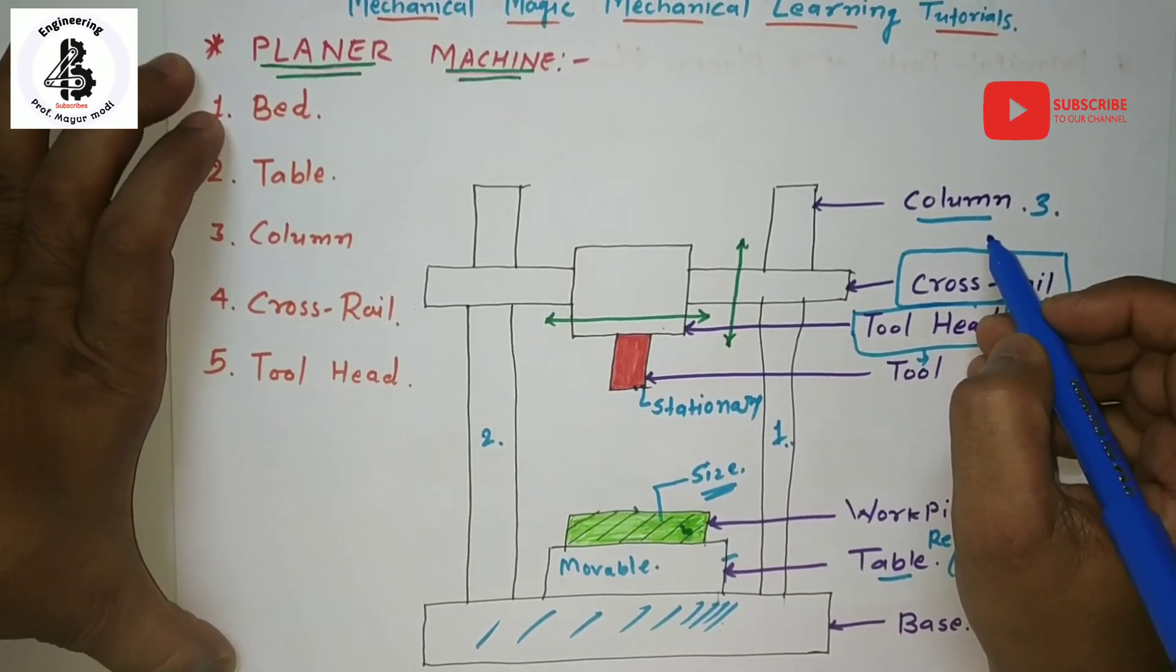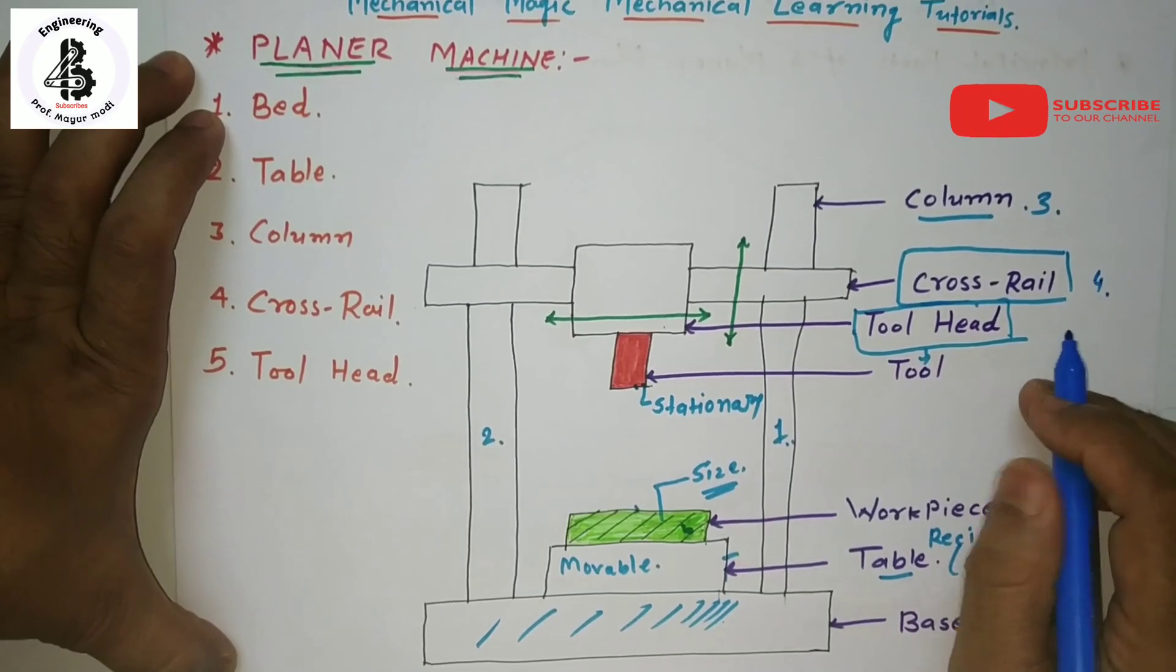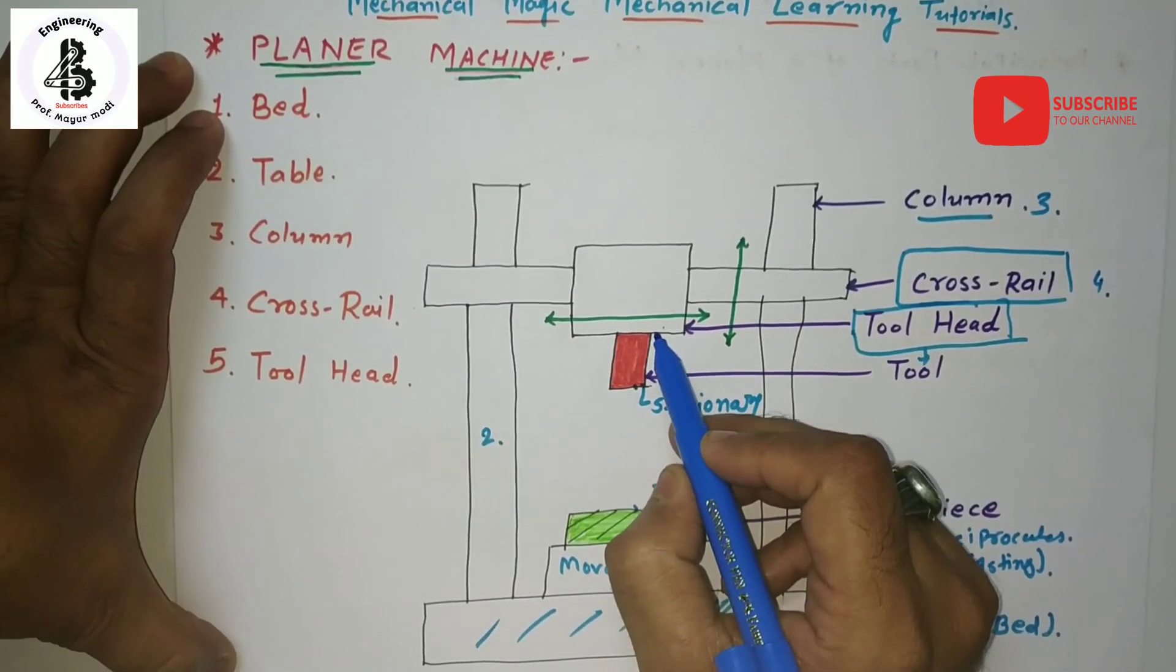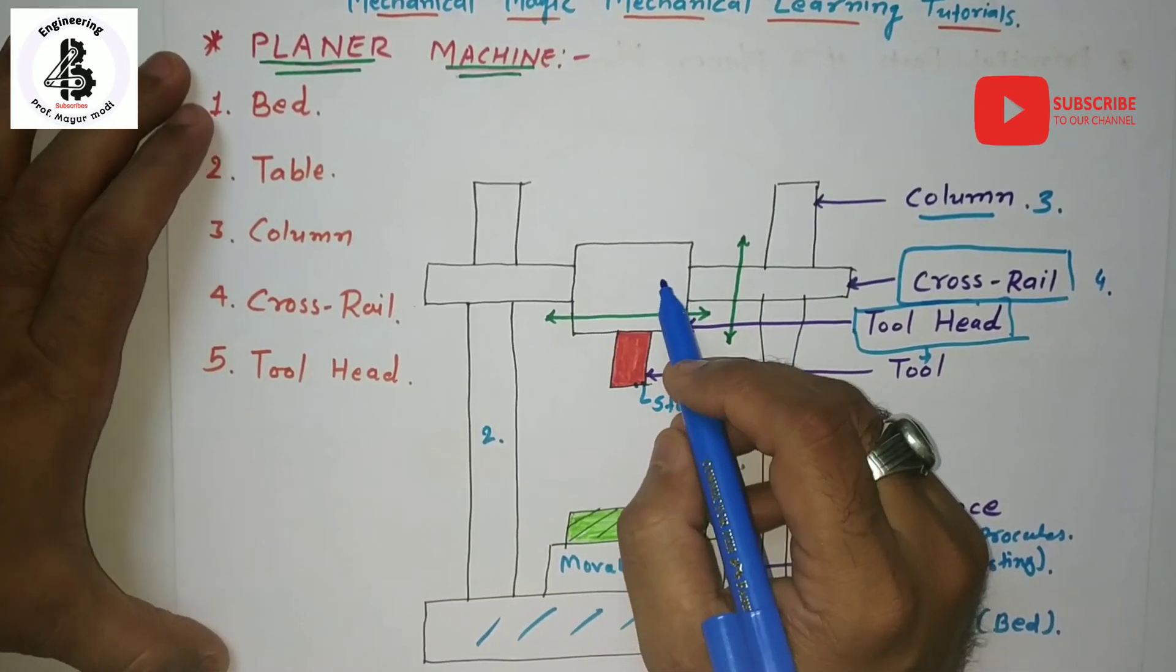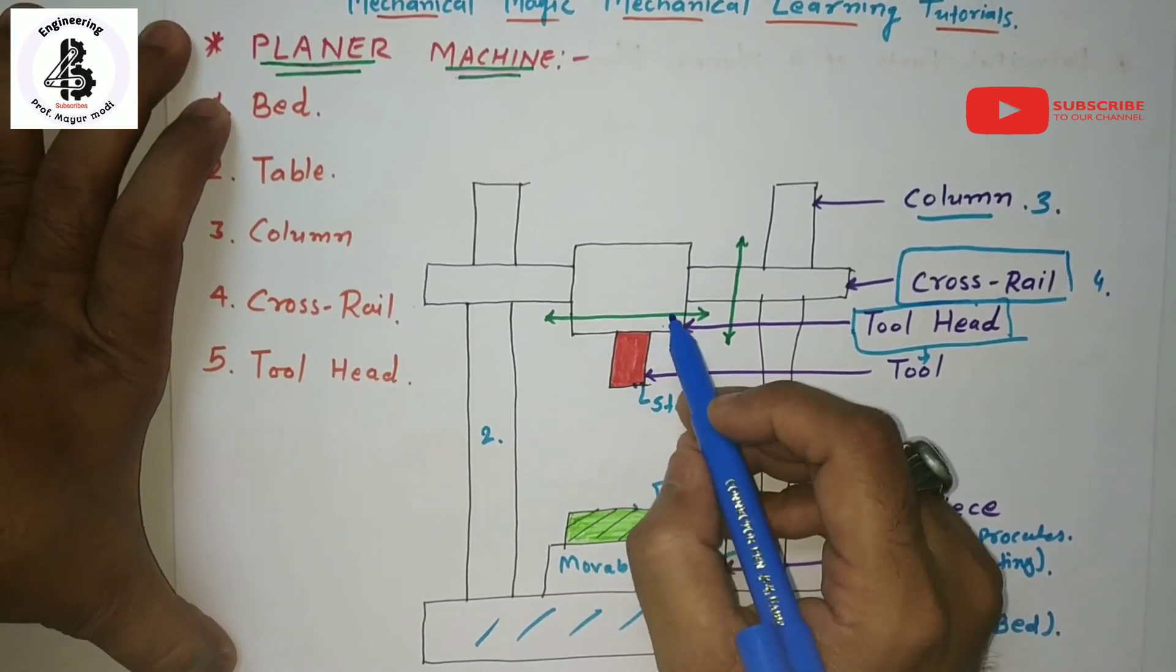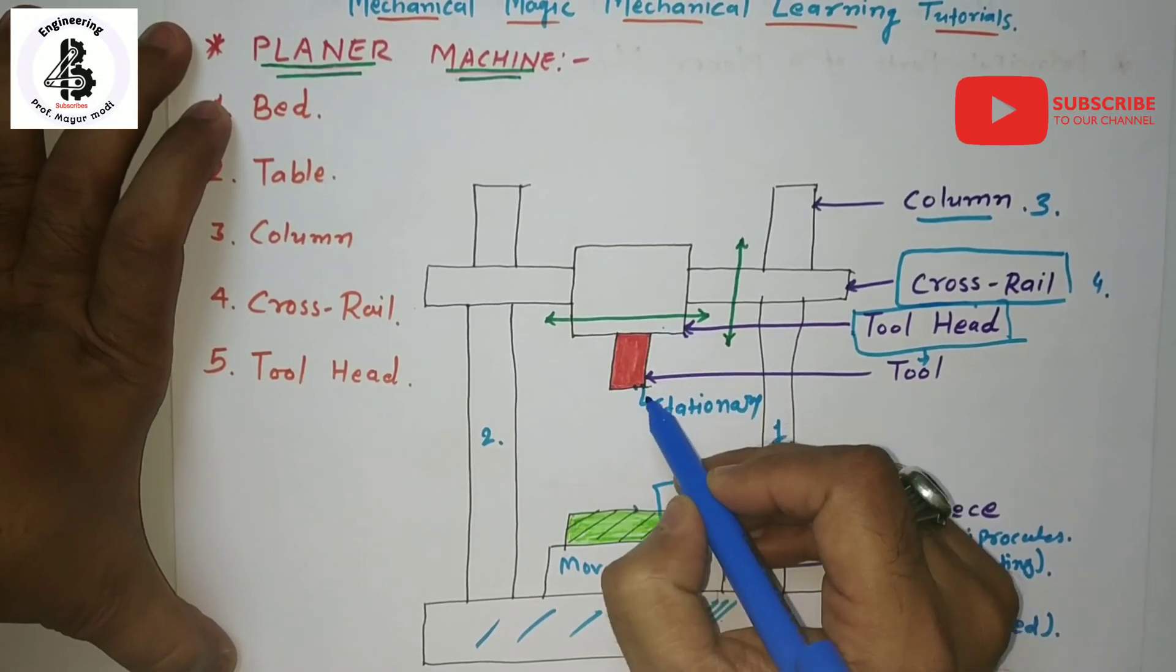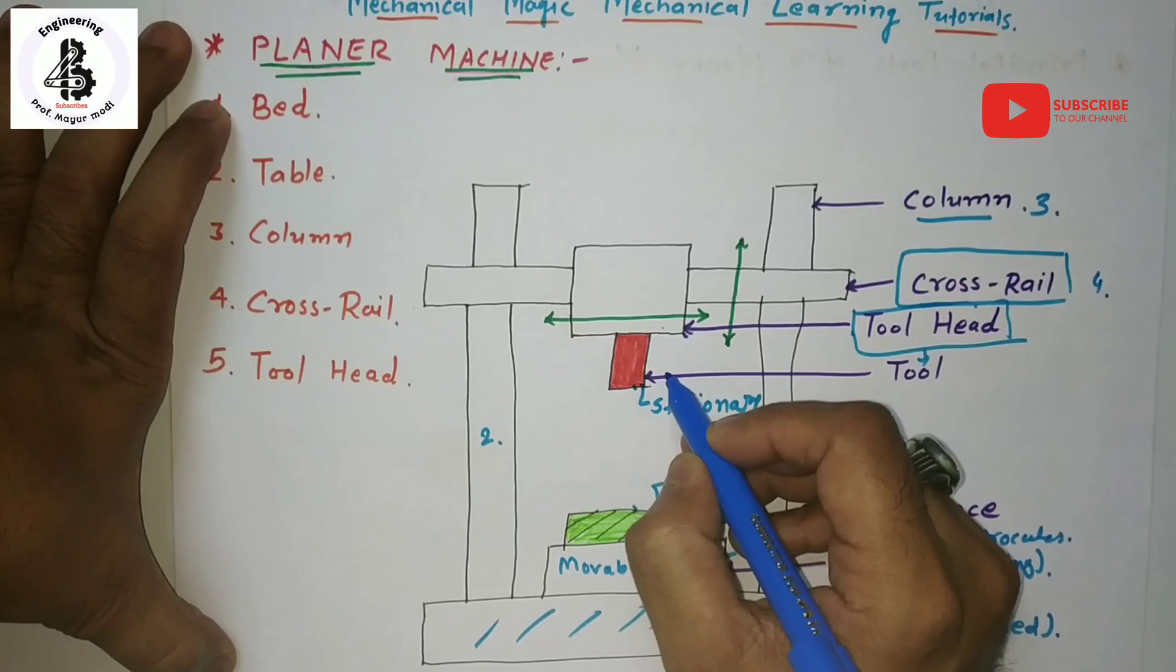Fourth important part, the cross rail. The cross rail is a rigid box-like casting connecting to the two housings. The housing can be clamped at any desired position into the workpiece side.